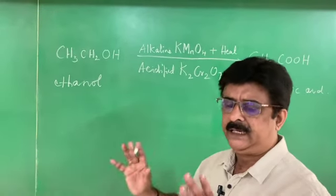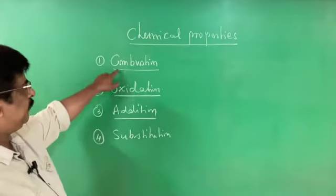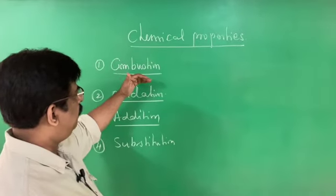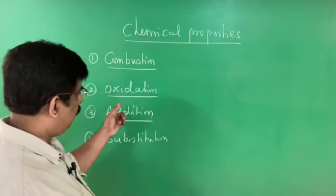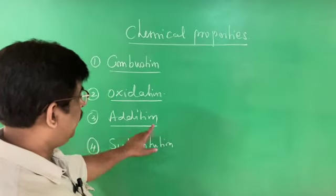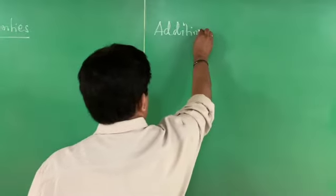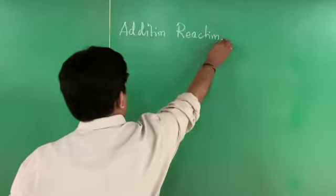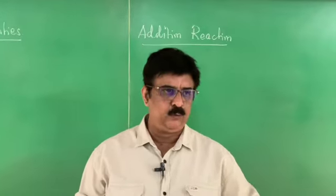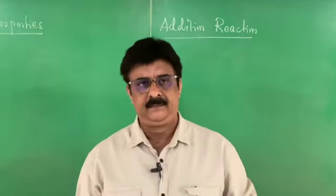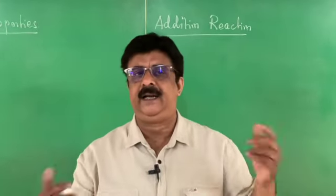The second chemical property is oxidation — addition of oxygen. The third chemical property in the textbook is addition reaction. For this reaction we need to understand the difference between oils and fats. Oils are unsaturated carbon compounds obtained from plant sources, such as oilseeds — groundnut oil, olive oil, sunflower oil. Fats are saturated carbon compounds obtained from animal sources such as ghee from milk.